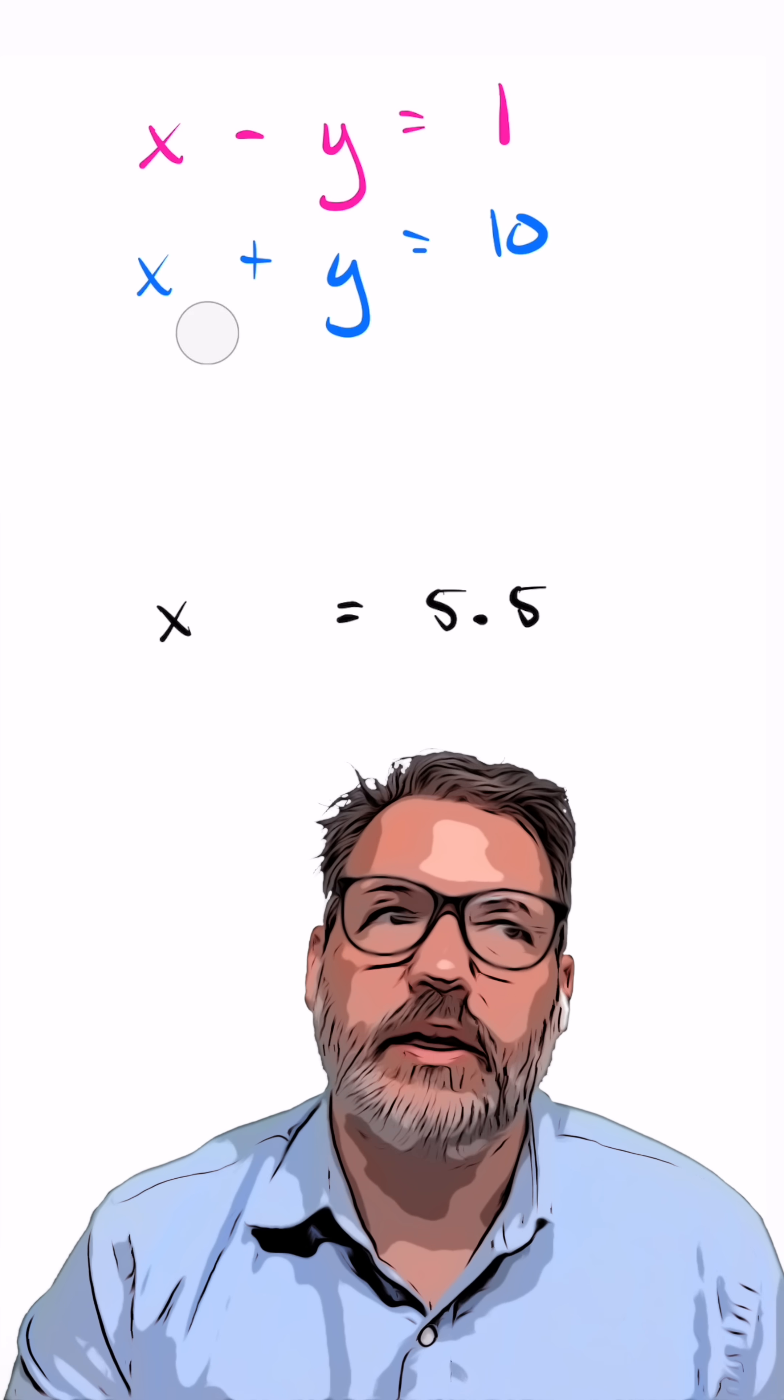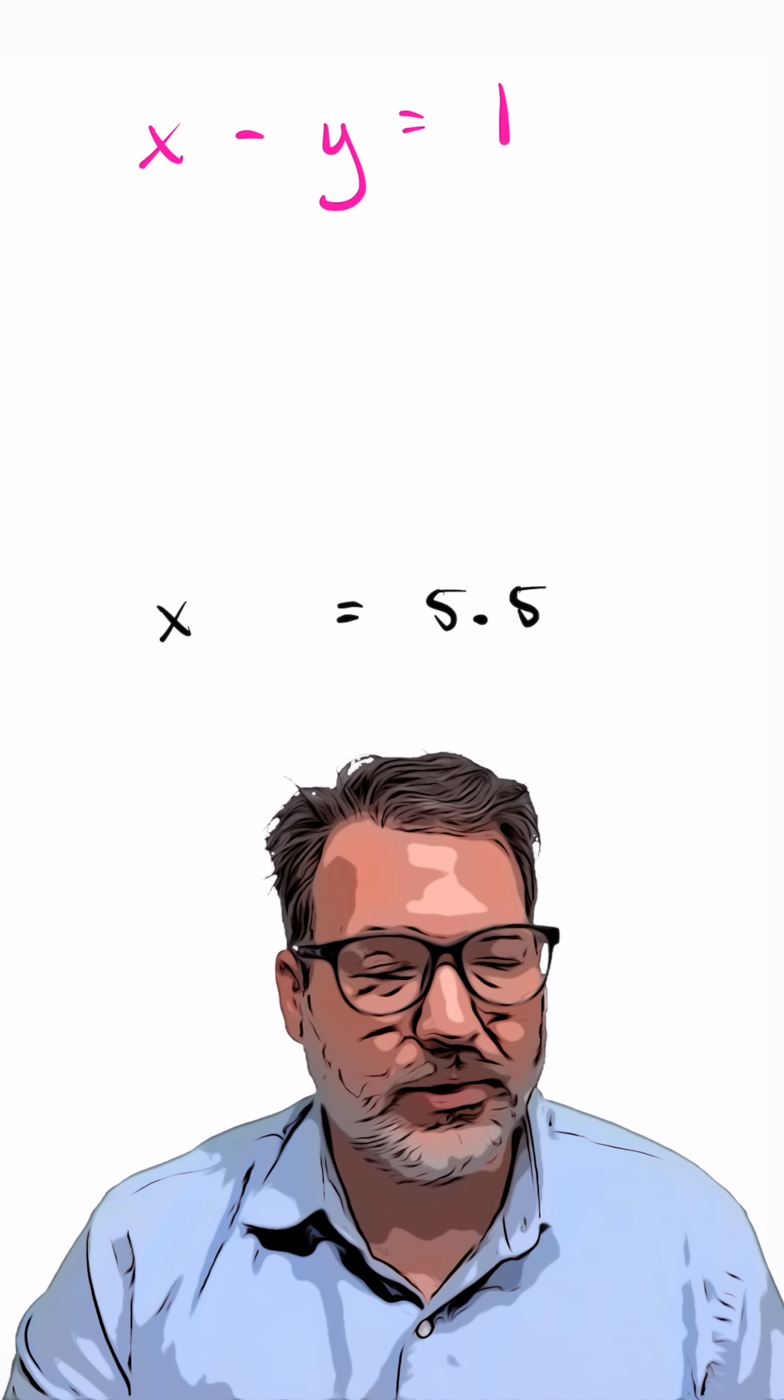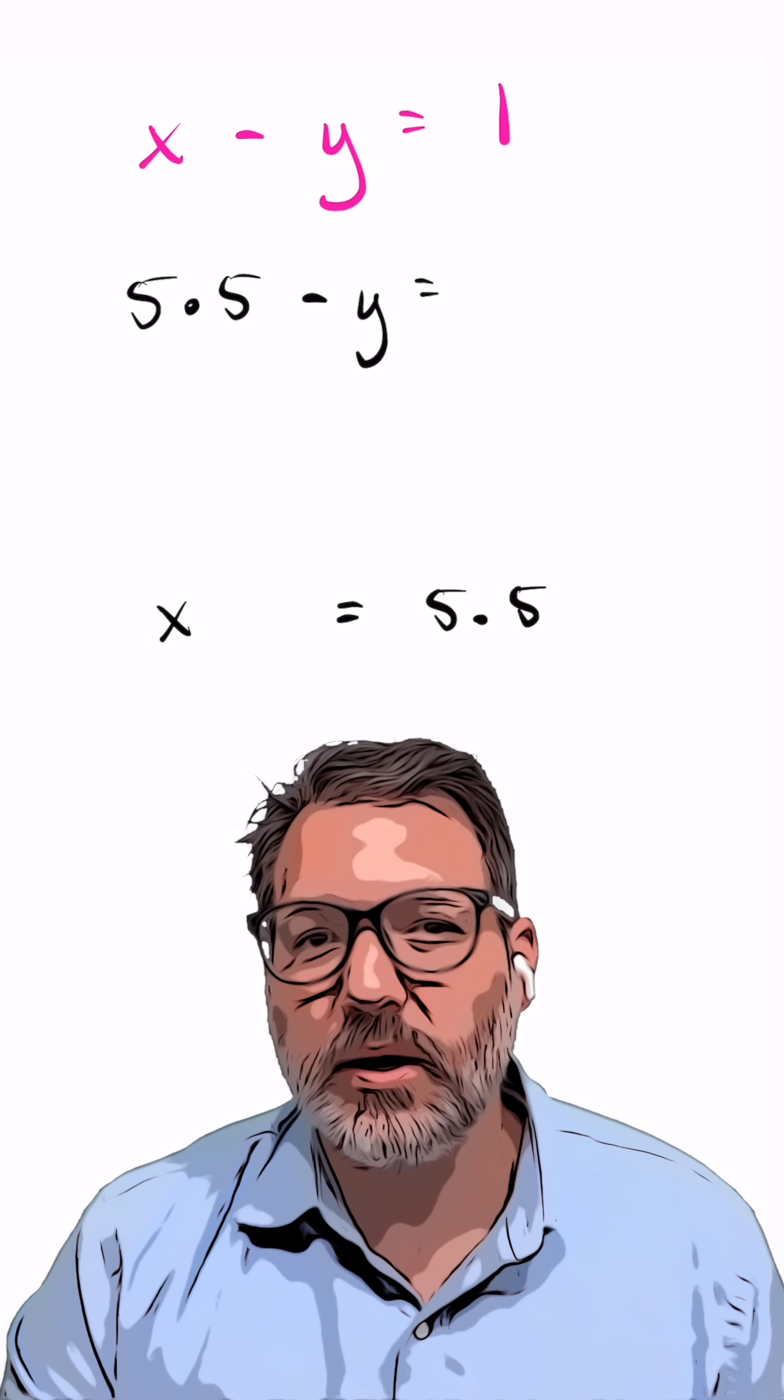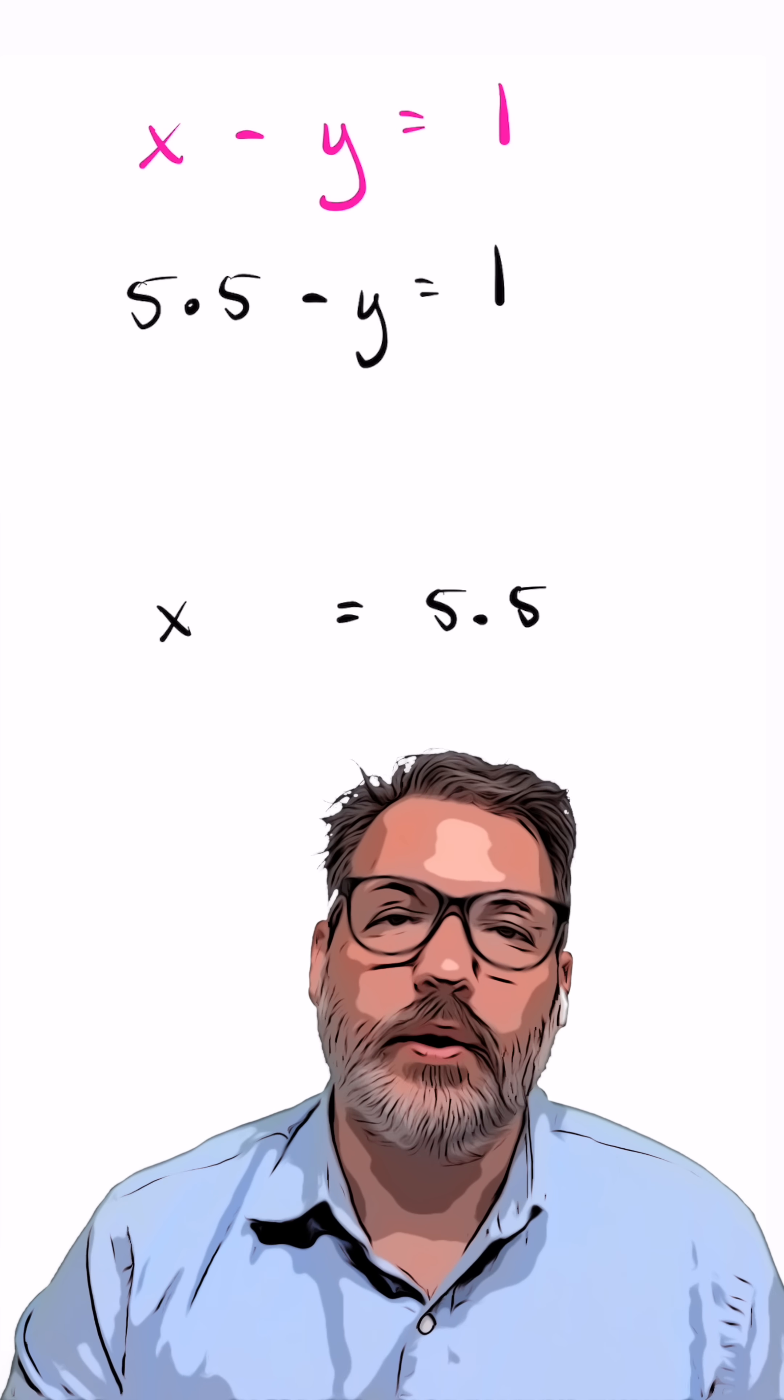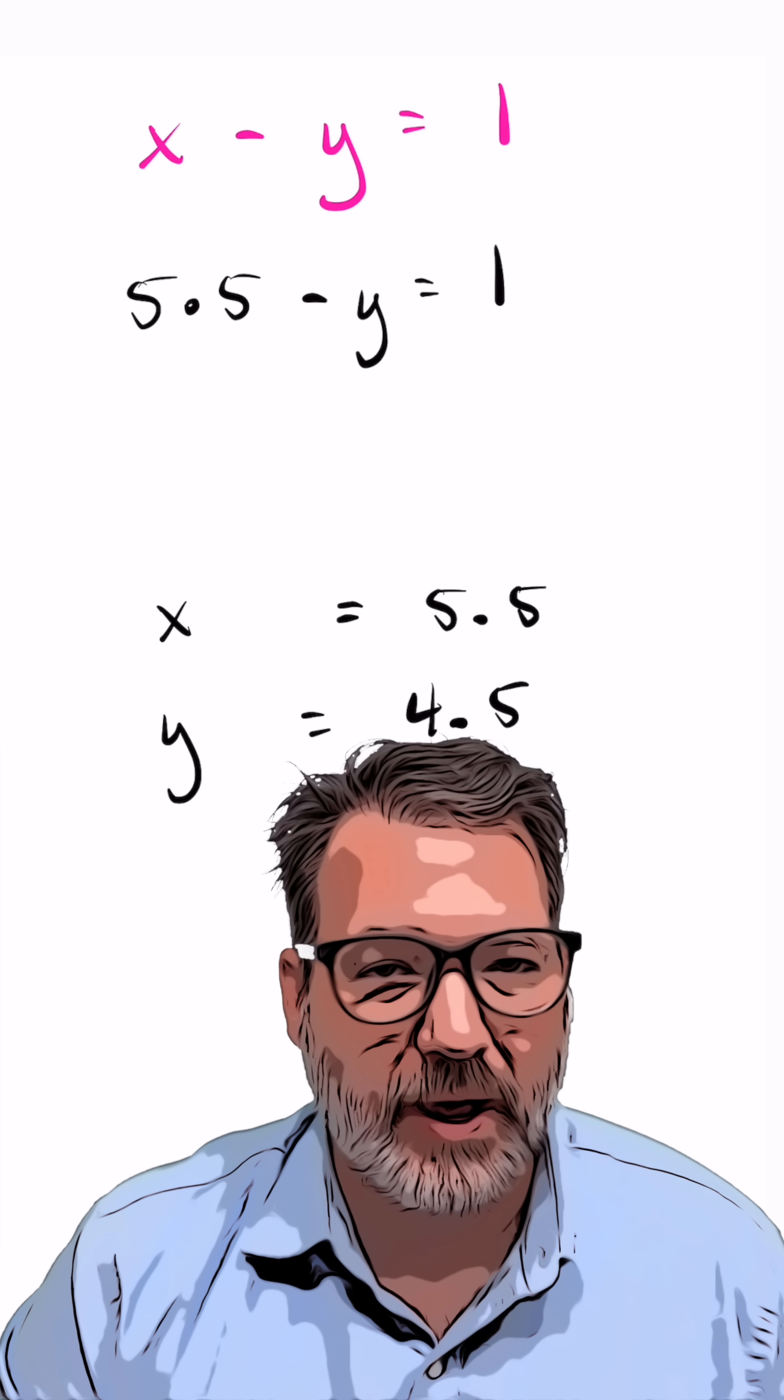Once I know that x is 5.5, I can go back to either of the two equations I had a second ago. I'll just use this first one. And I can substitute 5.5 minus what number y equals 1, the number 1 less than 5.5. It must be the case that y equals 4.5.